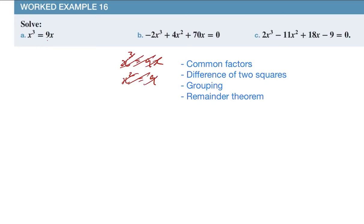So what we're going to do is first of all rearrange the equation so everything is on one side. I'm going to subtract 9x from both sides and I'm going to have x cubed take away 9x which equals zero. Then I'm going to go through my usual steps of factorizing.